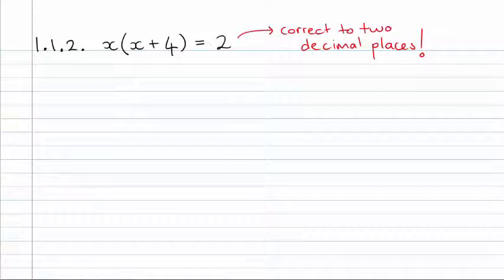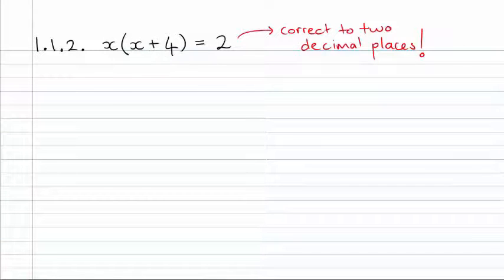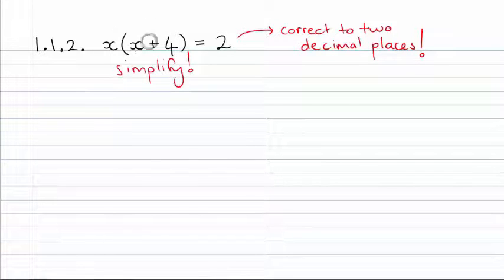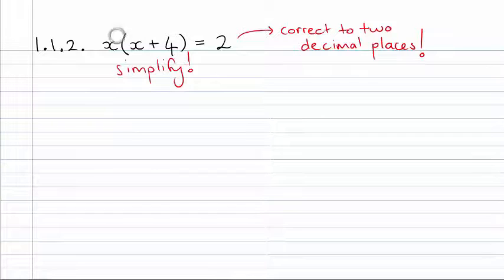Okay, so here's our equation. We have X multiplying into a bracket that has X inside of it, and it's all equal to 2 on that side. Now, I hope you're all shouting at me — Mr. Marie, it's firstly time to simplify this left-hand side here. We're not really sure what we need to do until we've gotten rid of those brackets, so times that X into that set of brackets, and then something's going to jump out at you.